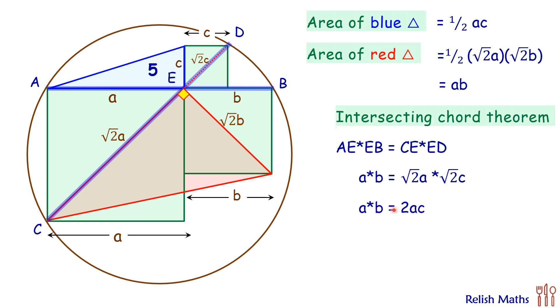So solving we get ab as 2 times ac or this 2 times ac we can write it down as 4 times of half ac.